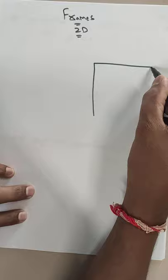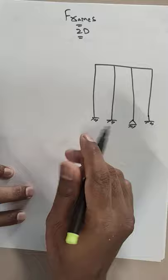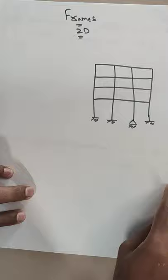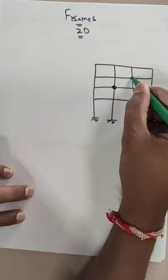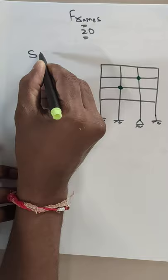We will take a best example, because in this example you have to know all the cases. So here I just took a frame. Now here I wanted to give you 2 hinges — one hinge here and one hinge here. So we have 2 hinges over here. Now we have to calculate static indeterminacy for this frame.